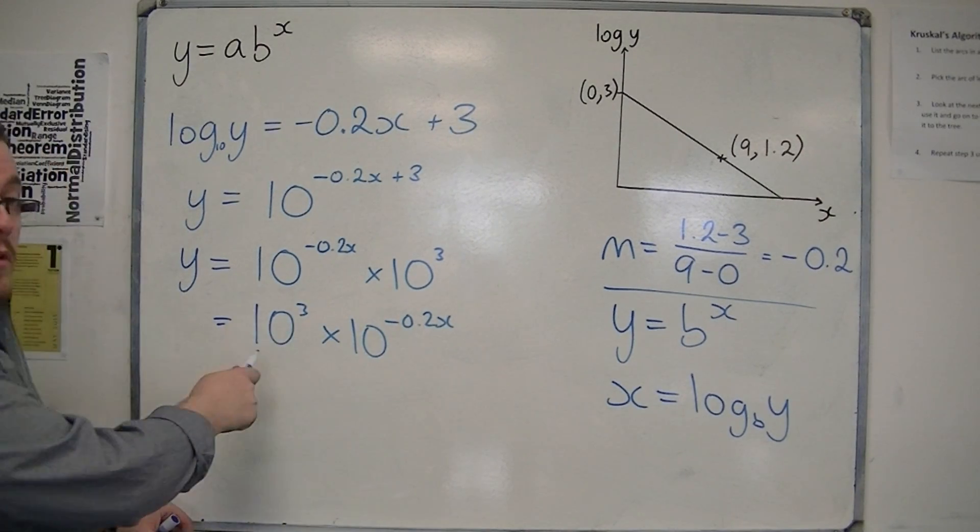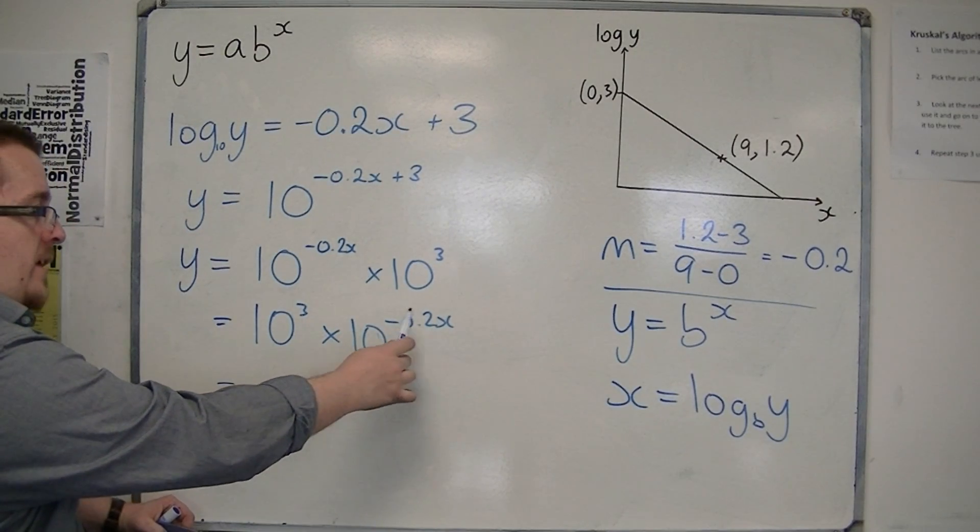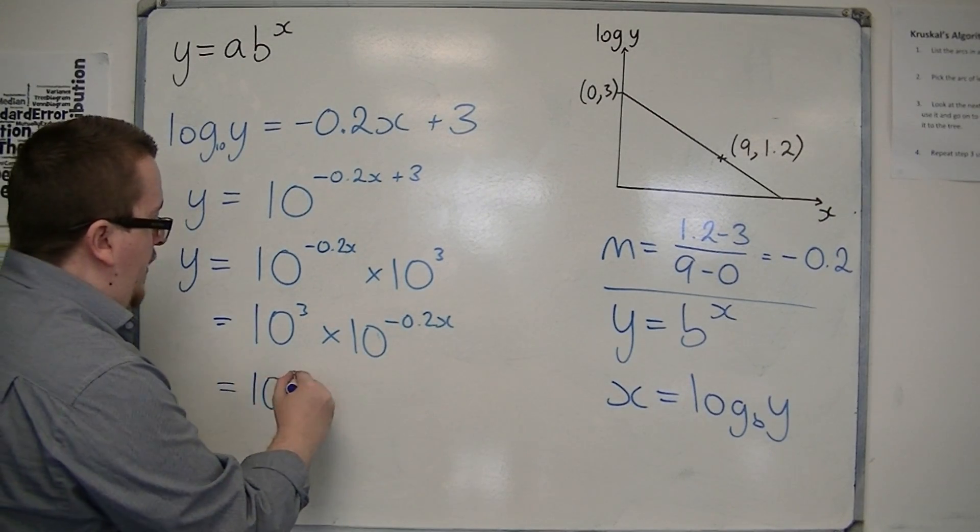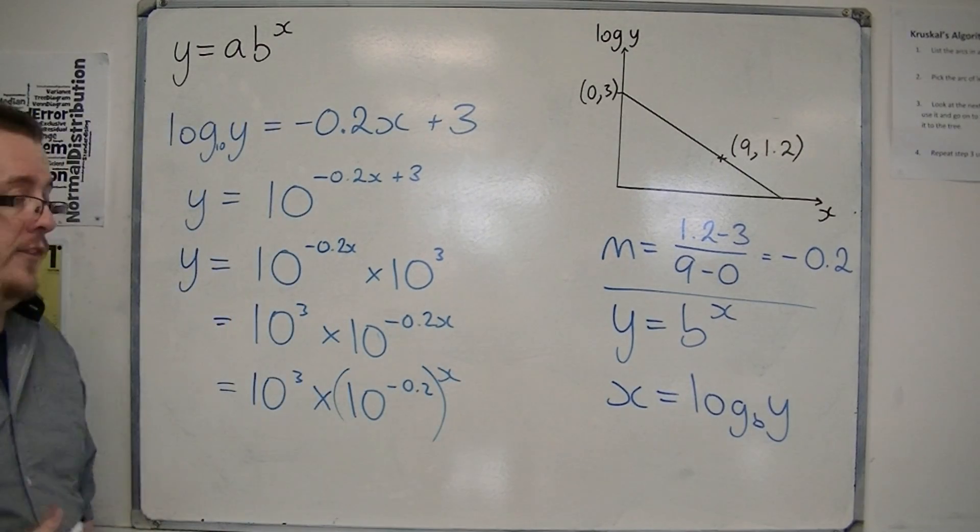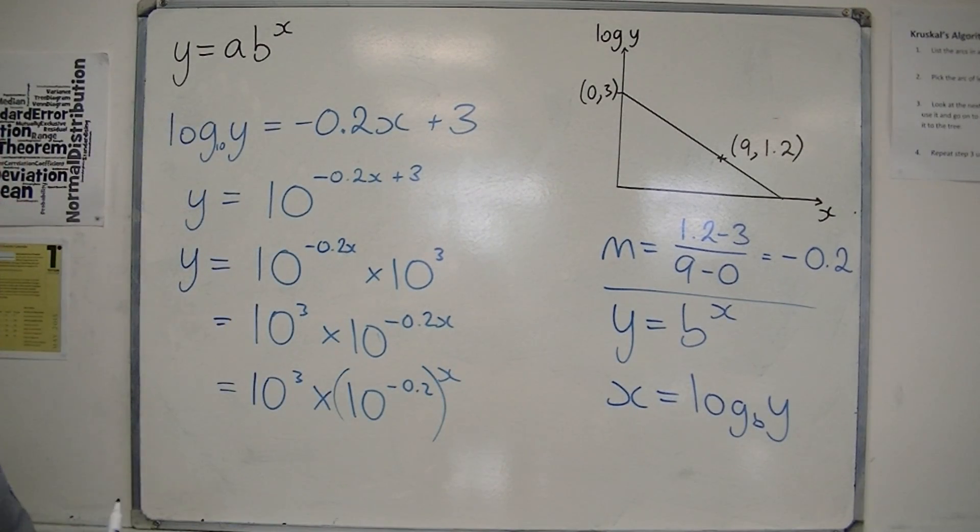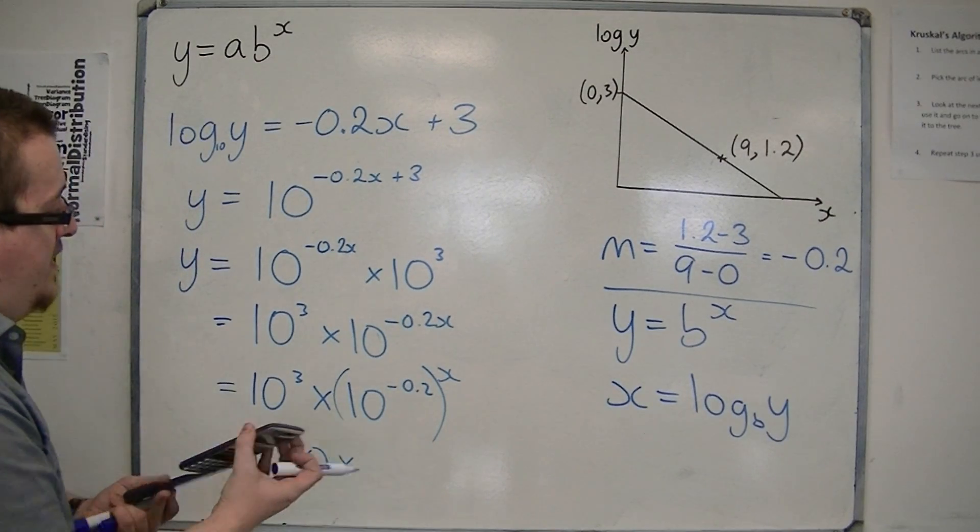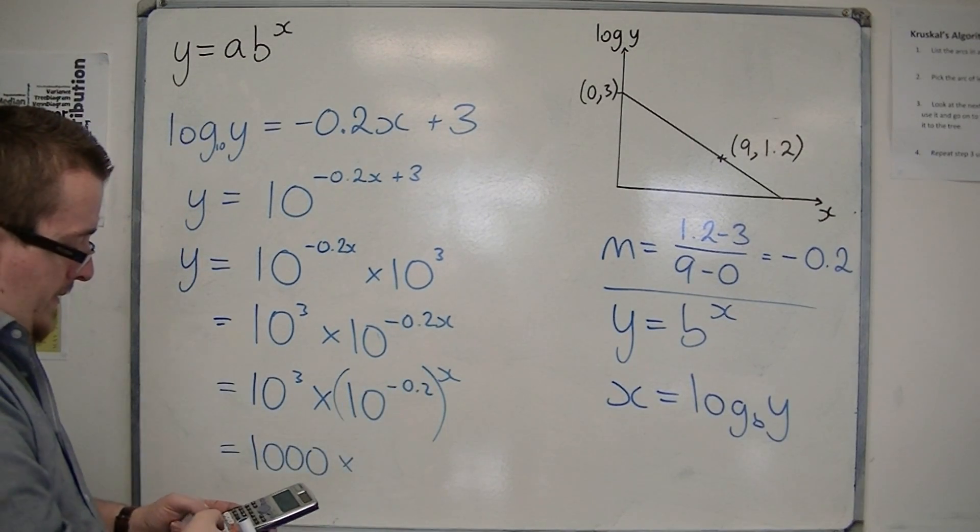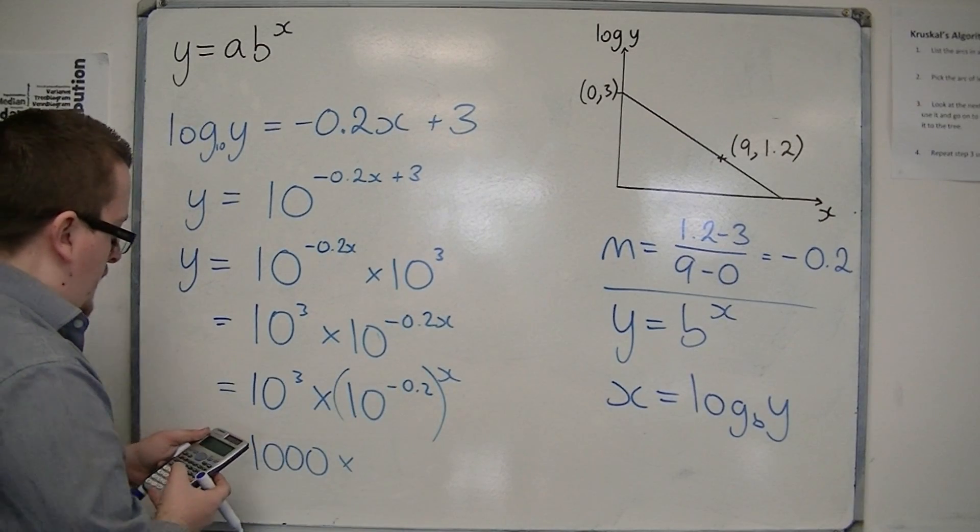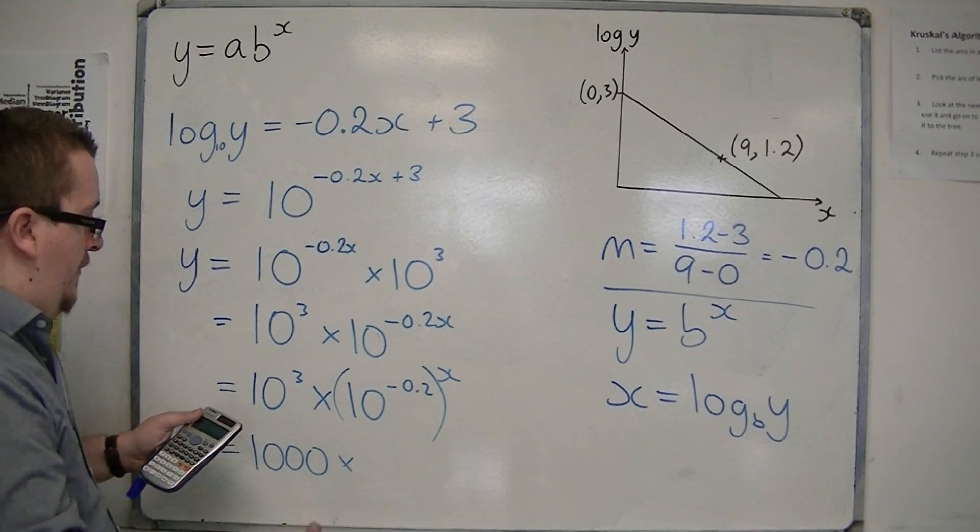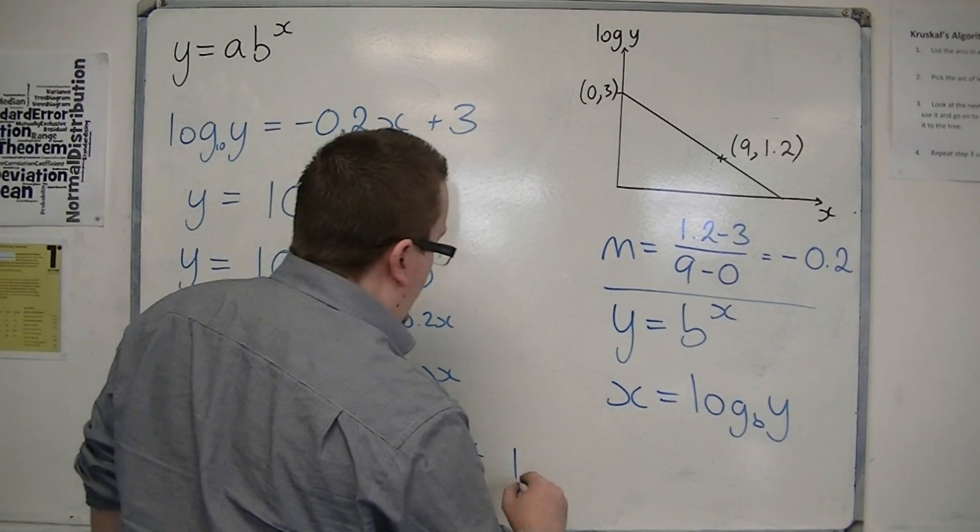So this is going to be my value of a. This part, the 10 to the minus 0.2x, I can write as 10 to the minus 0.2 to the power of x. That's using one of the other index laws. So I now have it with 10 cubed is 1,000, times by 10 to the power of minus 0.2. 10 to the power of minus 0.2 is 0.630957, so 0.631 to 3 significant figures.